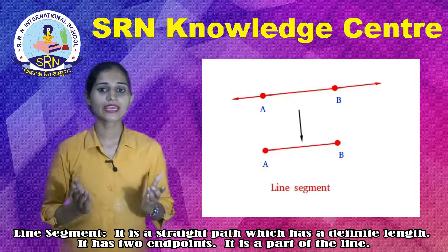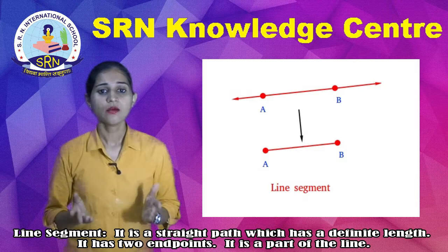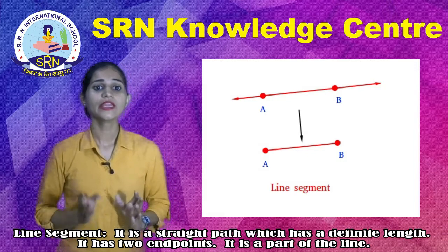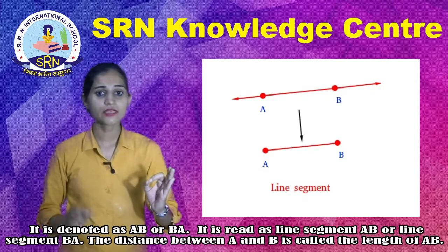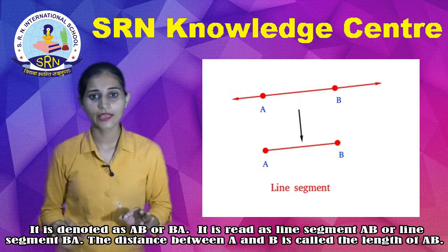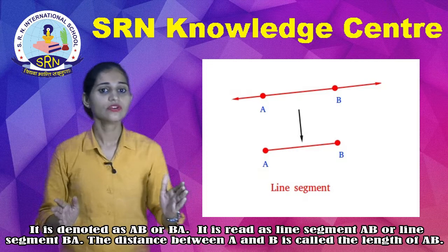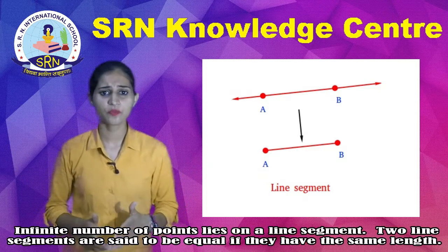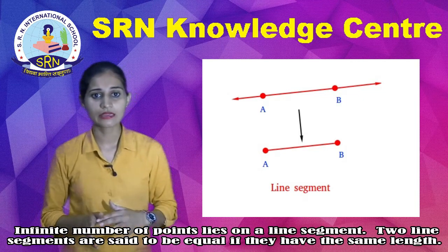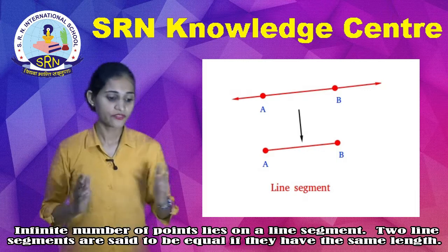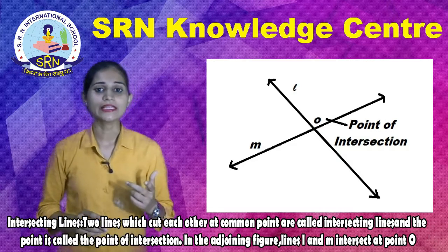Number four is Line Segment. It is a straight path which has a definite length. It has two endpoints and is a part of a line. It is denoted as AB or BA and is read as line segment AB or line segment BA. The distance between A and B is called the length of AB. An infinite number of points lie on a line segment. Two line segments are said to be equal if they have the same length.